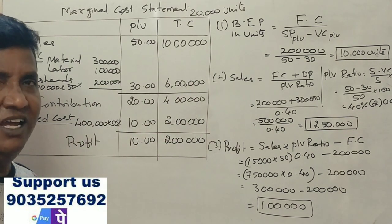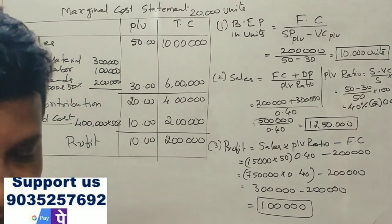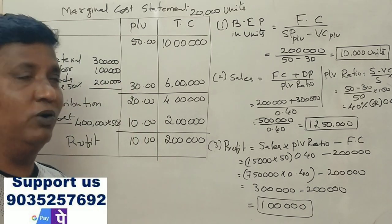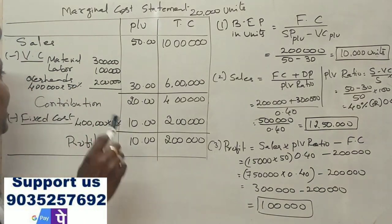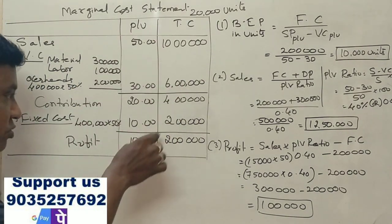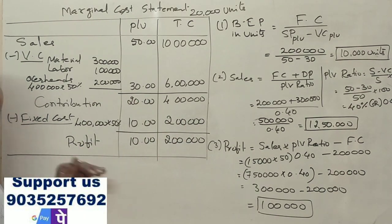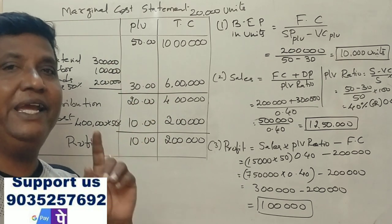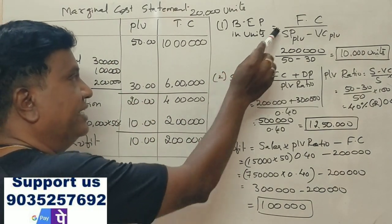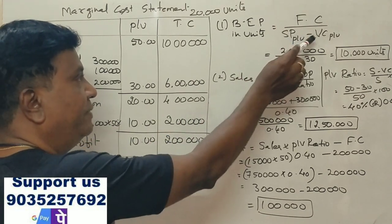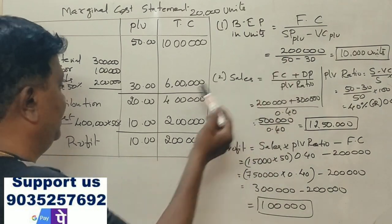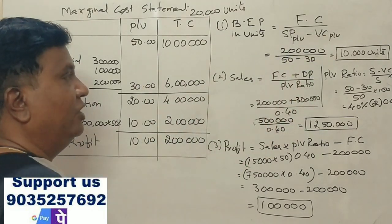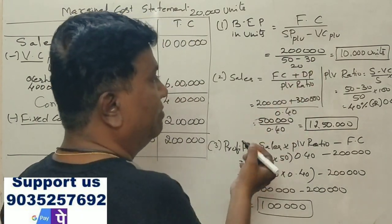Now we have to make the first question: break-even point in units. Fixed cost divided by selling price per unit minus variable cost per unit. So, 2 lakh rupees fixed cost divided by 50 rupees selling price minus 30 rupees variable cost. 2 lakhs divided by 20. 50 minus 30 is 20.